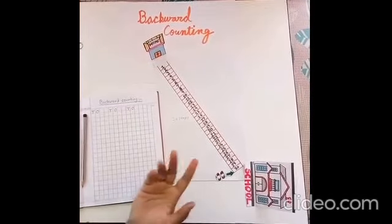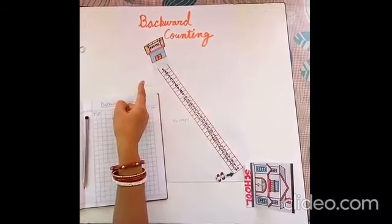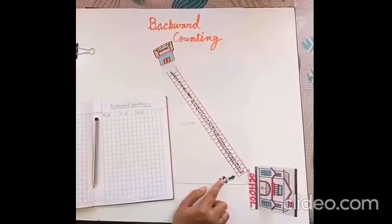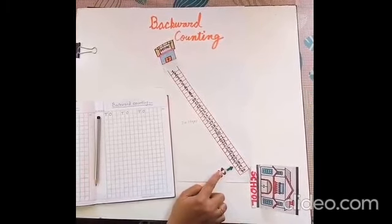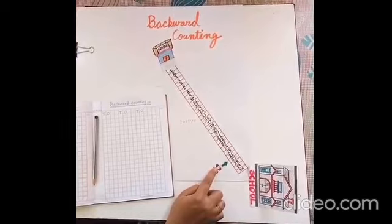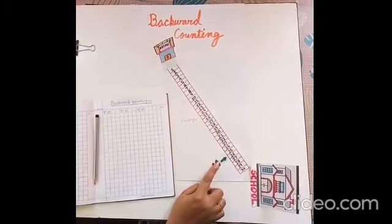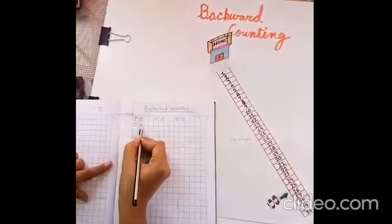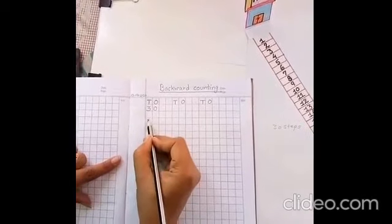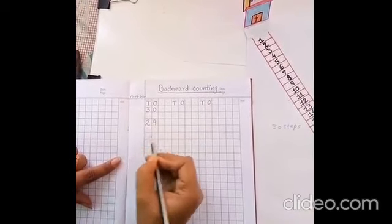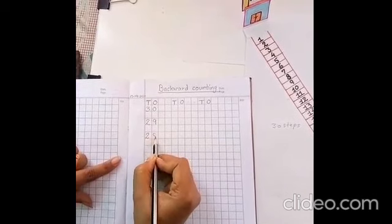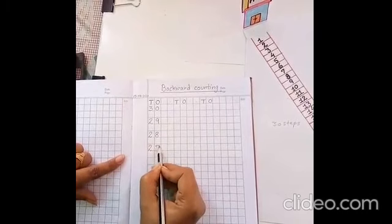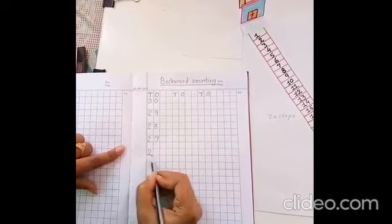Now after school you will return to your home. Now we will count backward to reach home. Now let's count: step number 30, number 29, 28, 27, 26. Let's write. 30, 29, 28, 27, and 26.